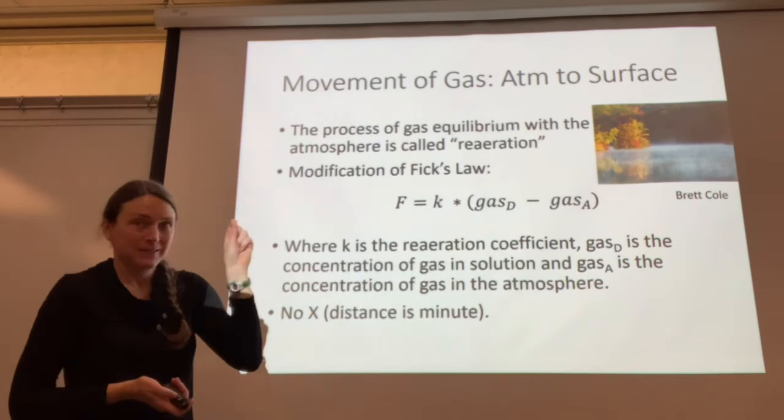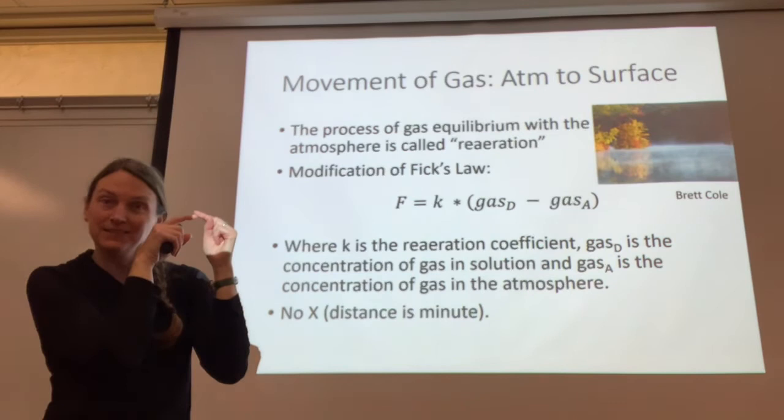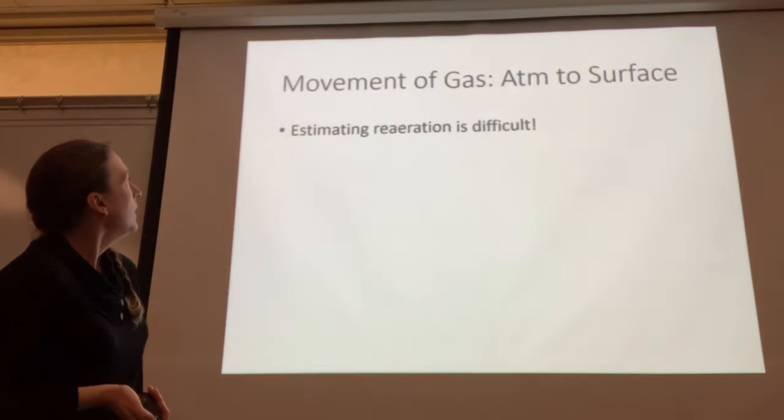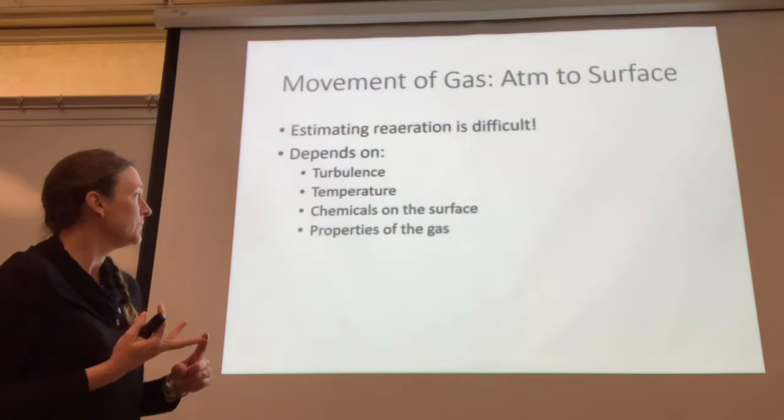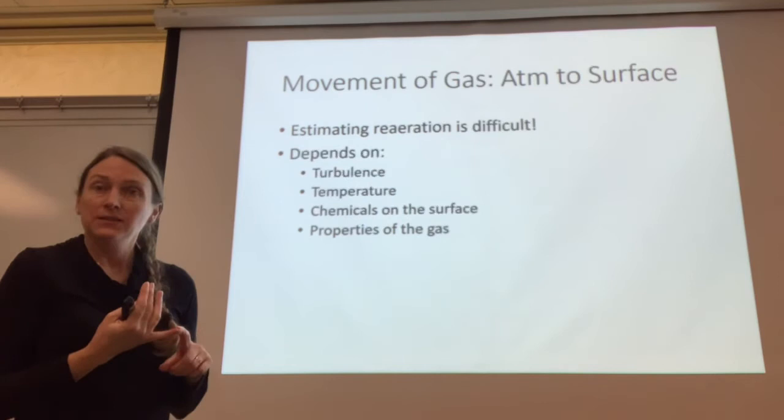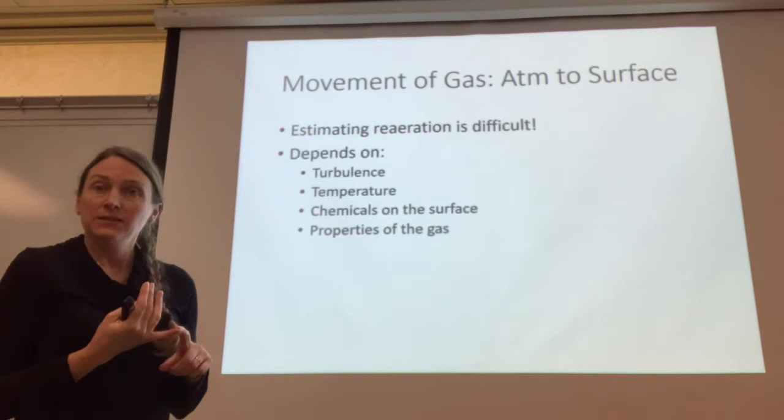Note that there's no X — no distance term — because the distance between the surface of the water and the atmosphere is minute or non-existent. Estimating re-aeration can be really difficult. It depends on things like the turbulence of the water, the temperature of the water, whether there are any chemicals on the surface, and on the properties of the gas. Things like CO2 will re-aerate at different rates compared to methane or oxygen.